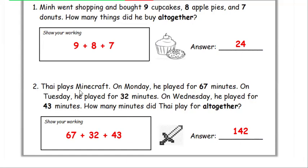Number 2. On Monday he played for 67 minutes. On Tuesday he played for 32 minutes. On Wednesday he played for 43 minutes. How many minutes did Thai play all together? Answer: 142.